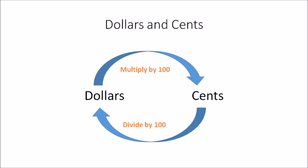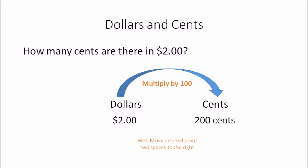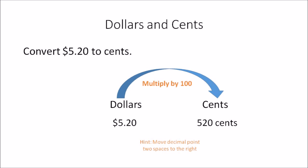100 is the conversion factor, simply because one dollar equals 100 cents. In this example: how many cents are there in two dollars? That means you're converting dollars to cents. You need to multiply two dollars by 100, and the answer is 200 cents. As a hint, when you're multiplying by 100 you need to move the decimal point two spaces to the right.